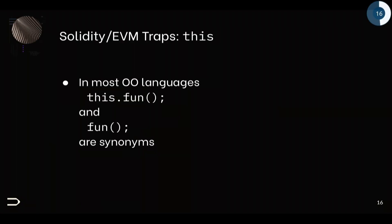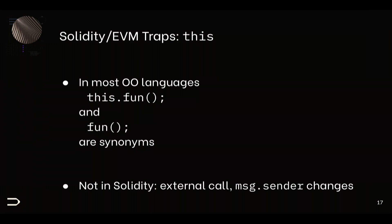EVM traps. Here's a very simple one. In most object-oriented languages you write `this.fun` and it's exactly the same thing as writing `fun`. Well, that's not the case in Solidity. The difference is that the first one is an external call, the second one is an internal call. External calls change the message sender. Since the message sender is our main authentication mechanism to make sure we're being called only by approved accounts, this has significant security implications. Whenever you say `this.fun` it's not something innocent — it's not just calling a local function.